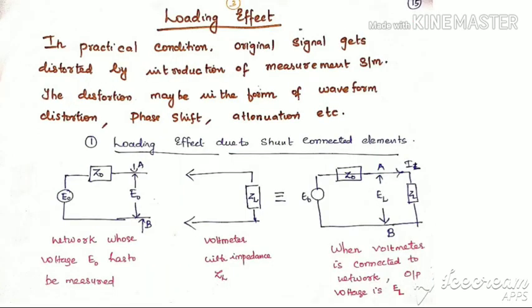Now let us see what is the loading effect. In practical conditions, the original signal gets distorted by introduction of measurement systems. For example, when we insert a meter for measuring current, or when we connect a voltmeter across points where we have to measure voltage, it will create an effect. This distortion may be in the form of waveform distortion, phase shift, or attenuation.